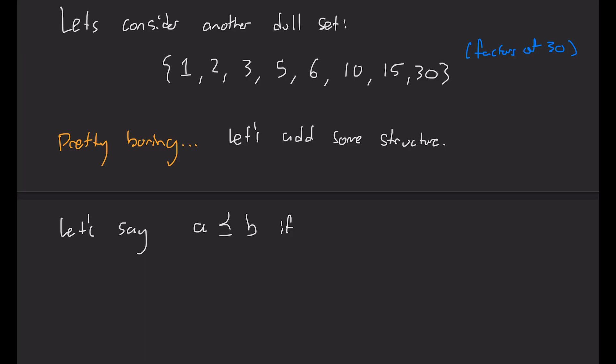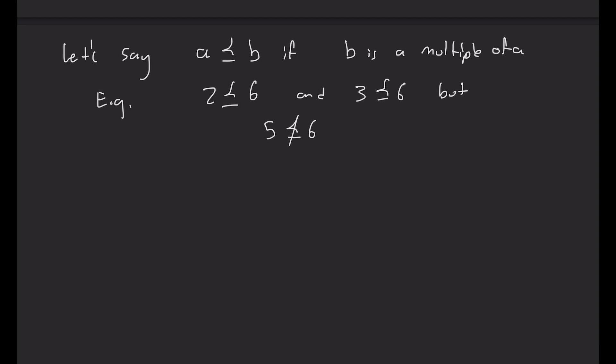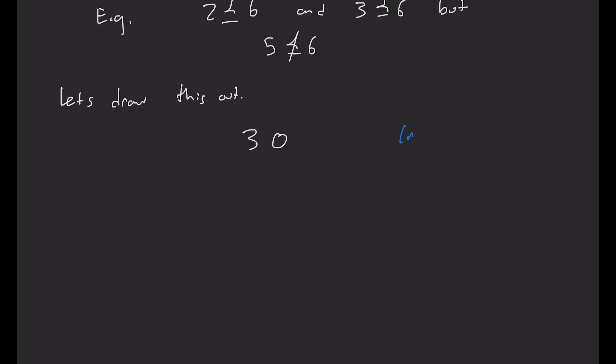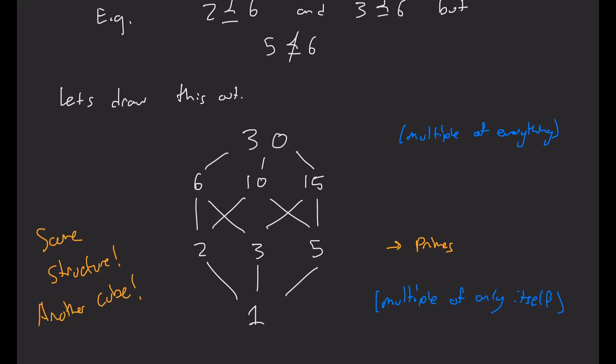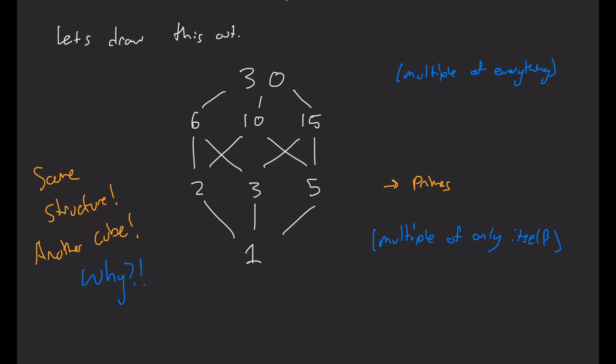So I'm going to say A is less than or equal to B with this curly less than or equal to sign if B is a multiple of A. For example, 2 is less than or equal to 6 and 3 is less than or equal to 6, but 5 is not less than or equal to 6 with my relation here. Okay, so let's draw out our structure again. And we'll start with 30 on top because that's a multiple of everything and 1 on the bottom because it's only a multiple of itself. And then one layer above 1, we have the primes. So 2, 3, and 5. And then one layer above those, we have 6, 10, and 15. And let's draw all the connections just like we did before. I'm drawing a connection whenever the number above is a multiple of the one below it and there's no number in between. And when the dust clears, we see that we actually get the exact same structure. That's another cube.